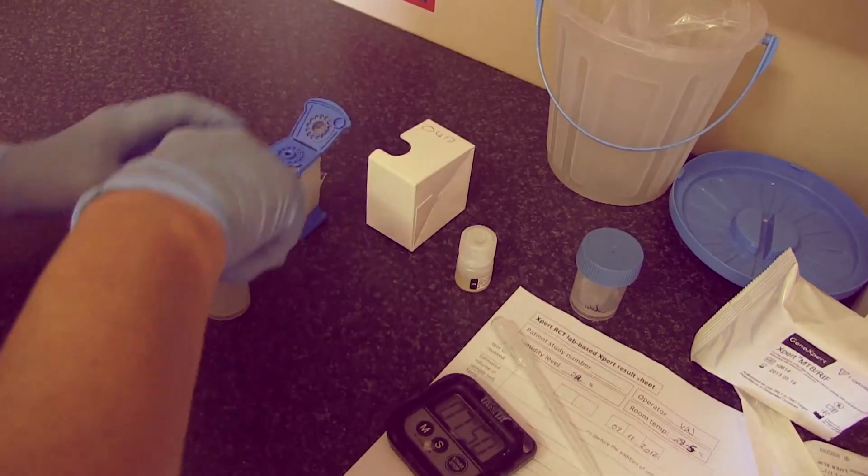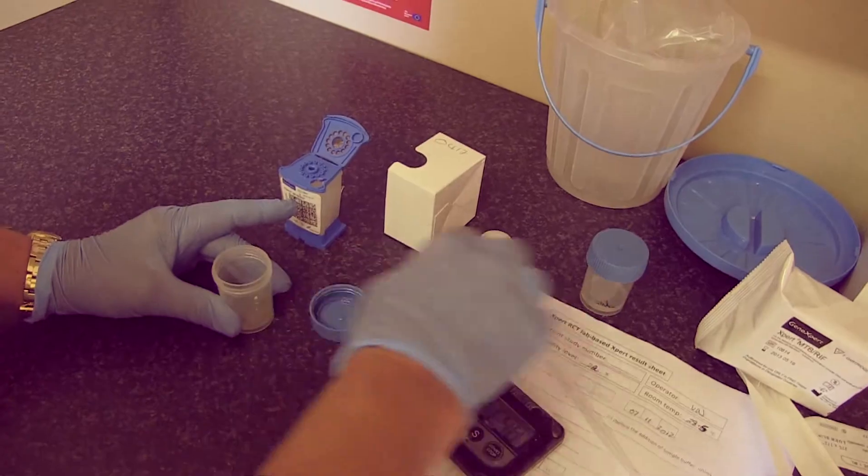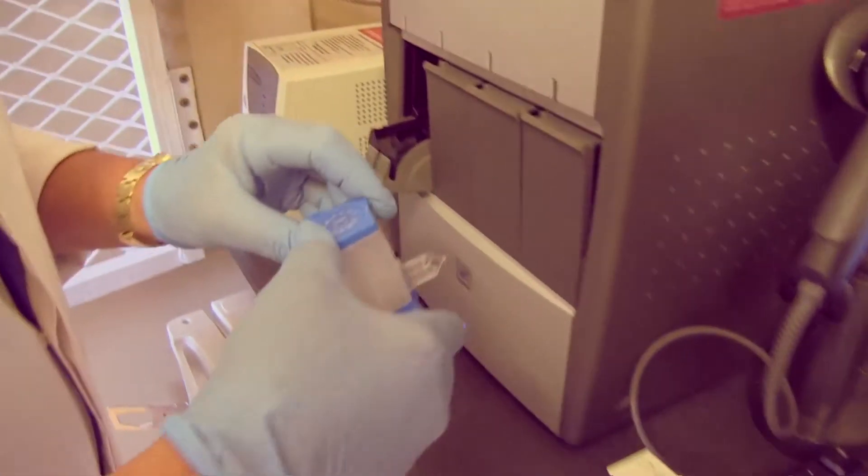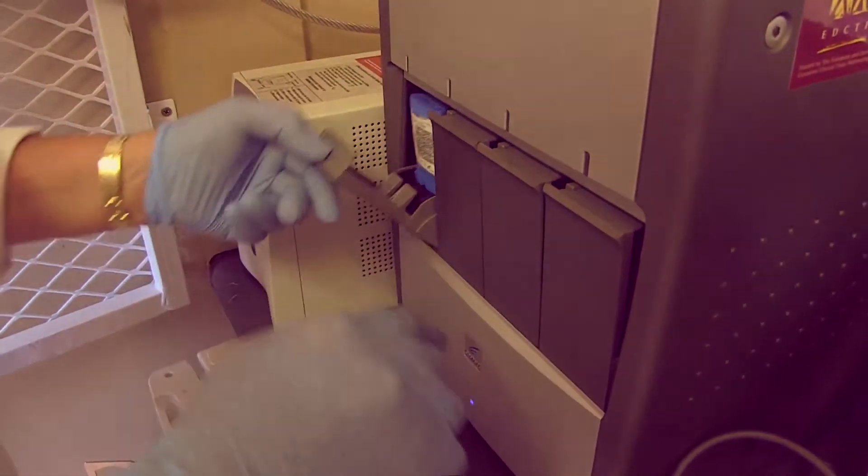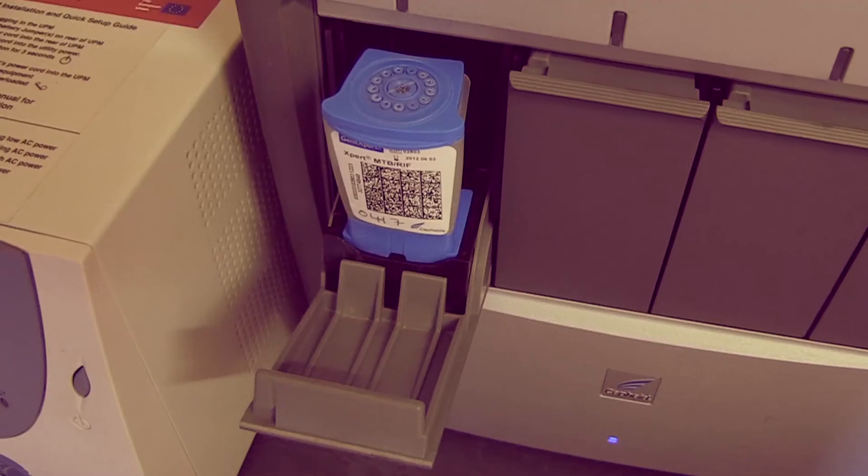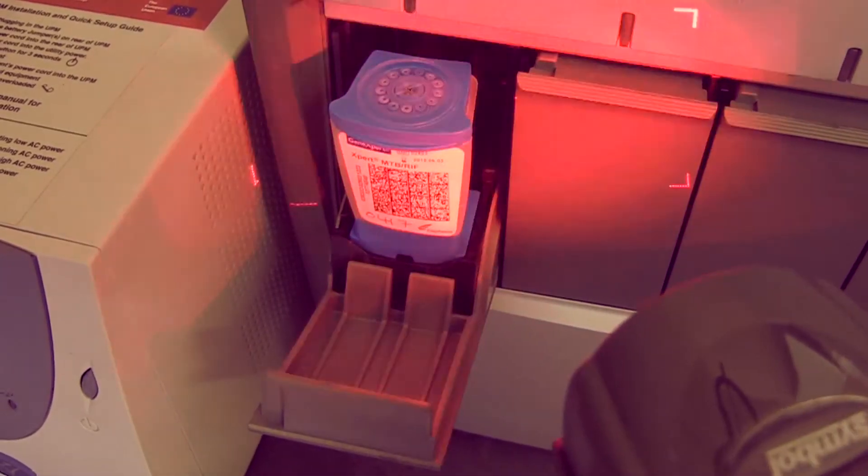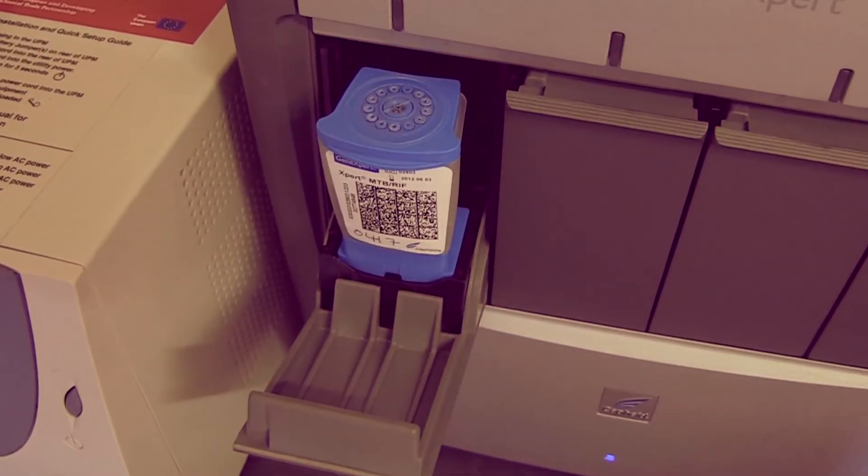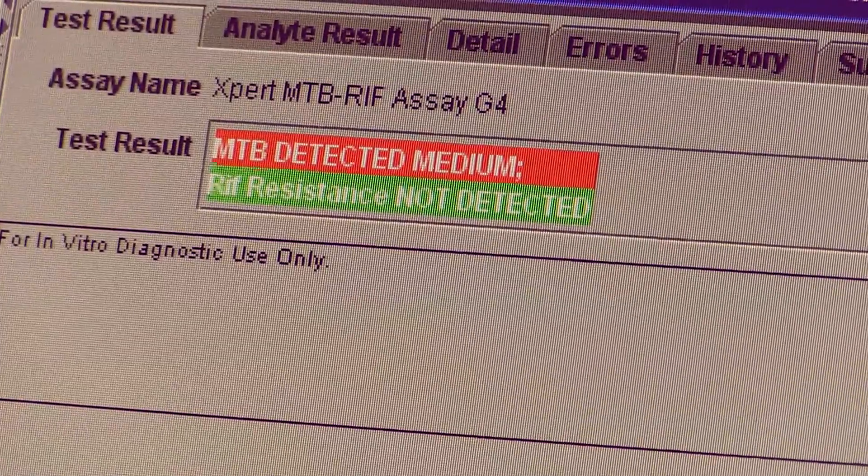A person provides a sputum sample in a container and then the cartridge is ready to be inserted into the machine. An hour 45 to two hours later you have a result and that result tells you whether or not there was TB detected. It tells you whether or not it thinks that there was rifampicin resistance detected, which is very important because in countries like South Africa, there is a very high prevalence of drug-resistant TB.